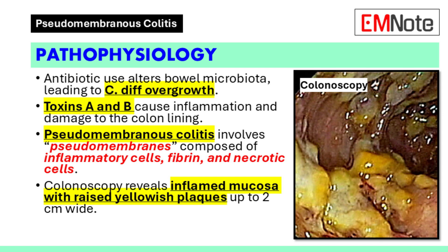These pseudomembranes are composed of a viscous collection of inflammatory cells, fibrin, and necrotic cells. Colonoscopy can reveal inflamed colonic mucosa with raised yellowish plaques that form widespread pseudomembranes. These plaques can be up to 2 centimeters wide.